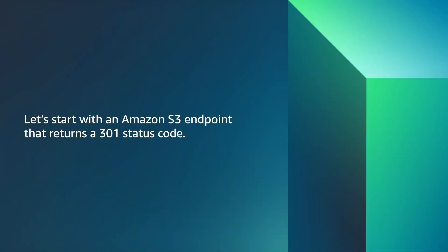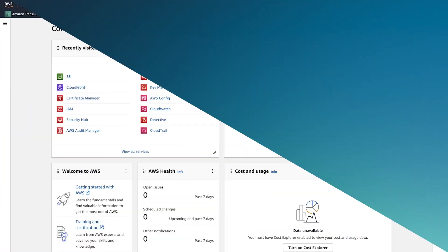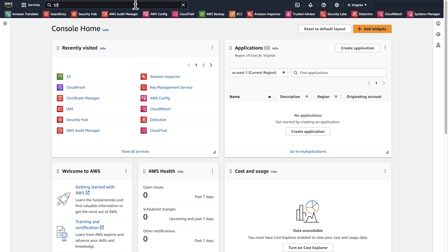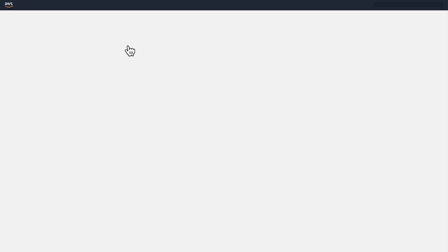First, let's start with an Amazon S3 endpoint that returns a 301 status code. After logging in to the AWS Management Console, navigate to the Amazon S3 console.